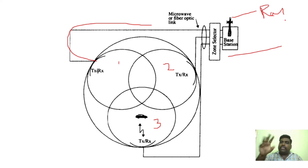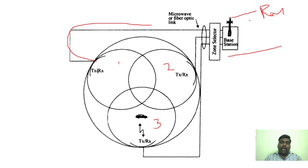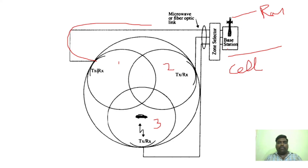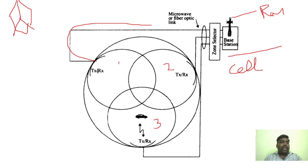All these zones share the same radio equipment — one radio resource is shared among them. The cell is connected to the base station, and the combination of all these zones and the base station forms one cell. So the three zones together constitute a single cell.